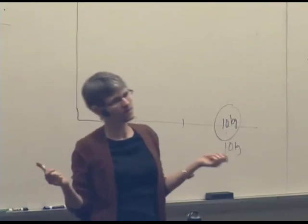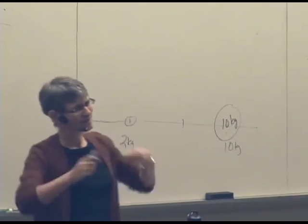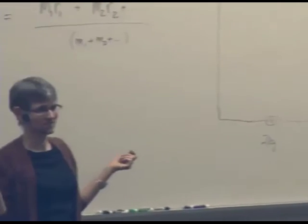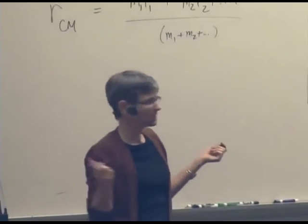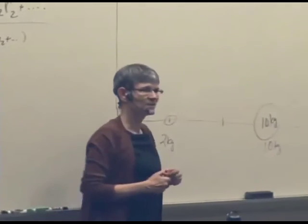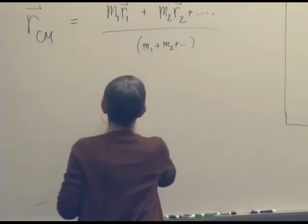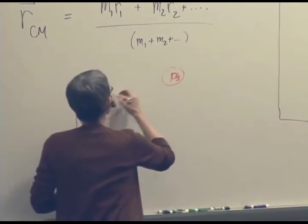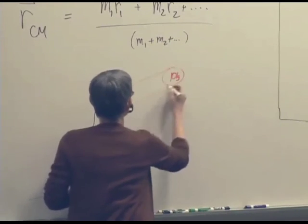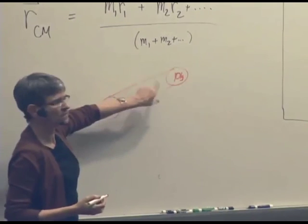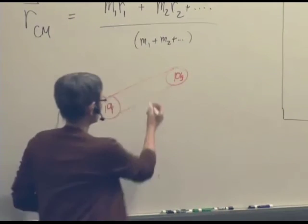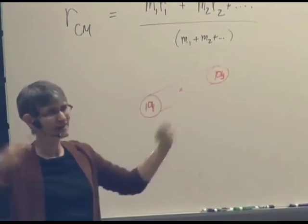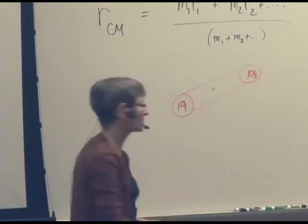It doesn't actually matter whether they're connected according to the definition. They could be two binary stars orbiting each other, or two particles that aren't even interacting at all. There doesn't have to be an atom at the center of mass. It's just this weighted average — the center the object might rotate around.